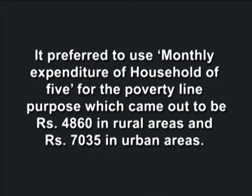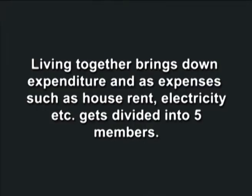The expert group submitted its report in 2014, giving per capita monthly expenditure as rupees 972 in rural areas and rupees 1407 in urban areas as the poverty line. It preferred to use monthly expenditure of a household of five for the poverty line purpose, which came out to be rupees 4860 in rural areas and rupees 7035 in urban areas. It argued that considering household expenditure is more appropriate than that of individuals, as living together brings down expenditure since expenses such as house rent and electricity get divided among five members.